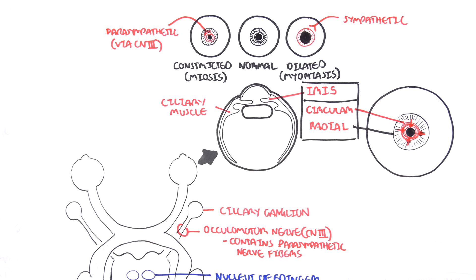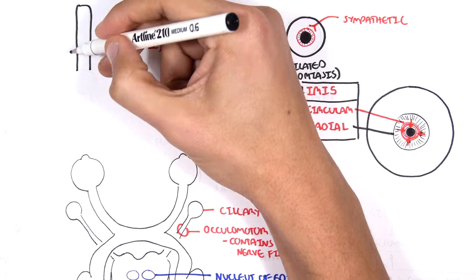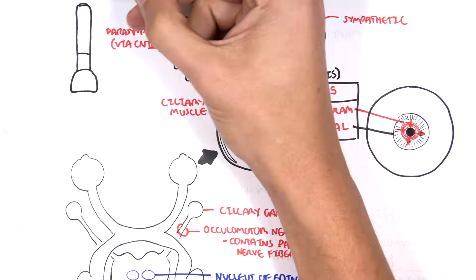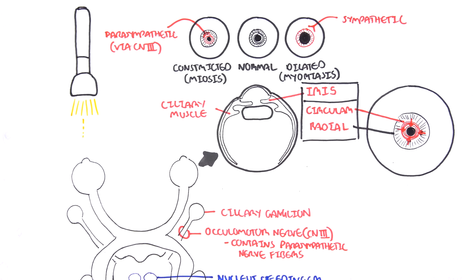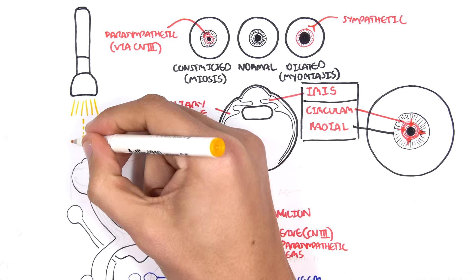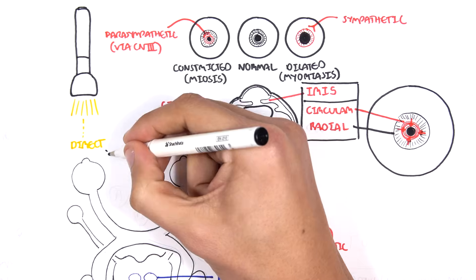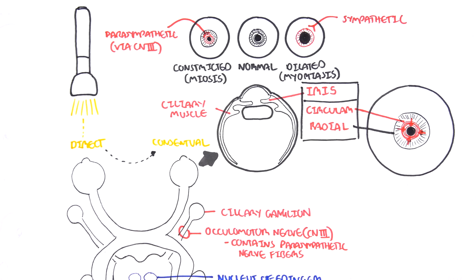When we shine a light to the left eyeball, this is known as the direct response. Whatever happens to the other eyeball is known as the consensual response. So when we shine a light to the left eyeball, the pupils on the left would constrict, but so will the pupils on the right side — and this is known as the consensual response.